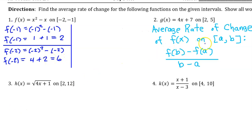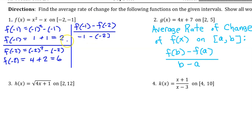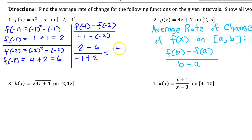Now we use the average rate of change formula: f(b) minus f(a) over b minus a. So that's f(−1) minus f(−2) over −1 minus −2. f(−1) is 2 and f(−2) is 6. Negative 1 minus negative 2 is the same as −1 plus 2. So 2 minus 6 is −4, and −1 plus 2 is positive 1. The average rate of change is −4.